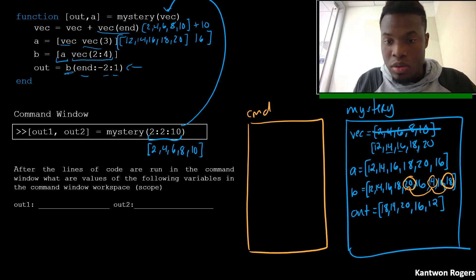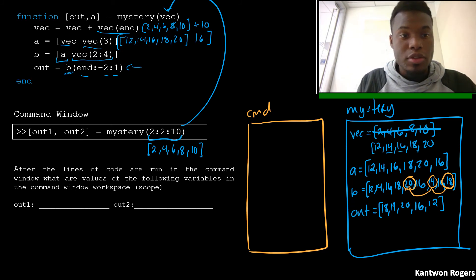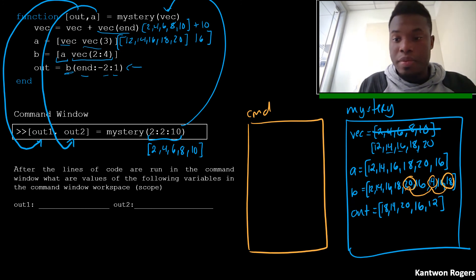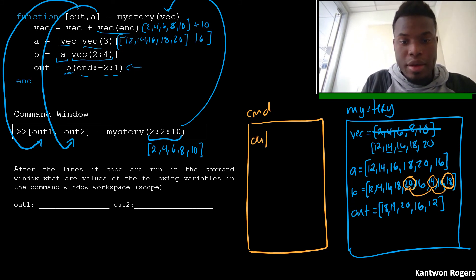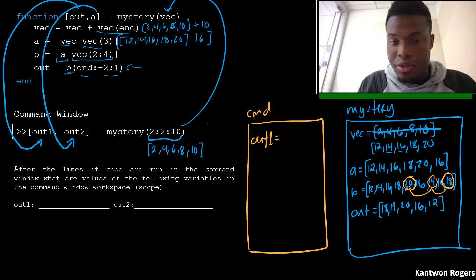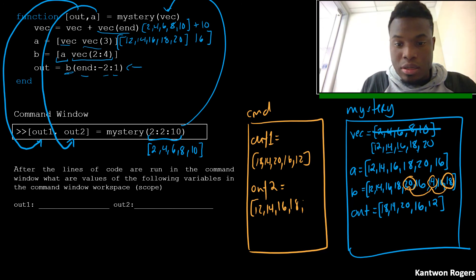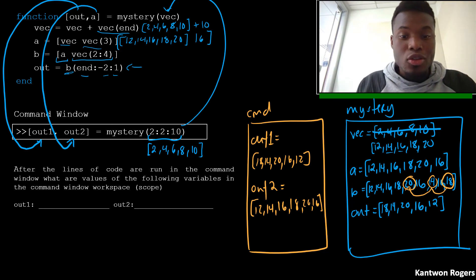Alright, so then after that, our function ends, and we told MATLAB we were going to output whatever is inside of out as our first output here. So in our command window, we have out1 as whatever out is. So that would be 18, 14, 20, 16, and 12. And then out2 is whatever A is. And so A was 12, 14, 16, 18, 20, and 16. And so the problem asks, what's the value of out1 and out2? So those two would be the answer.